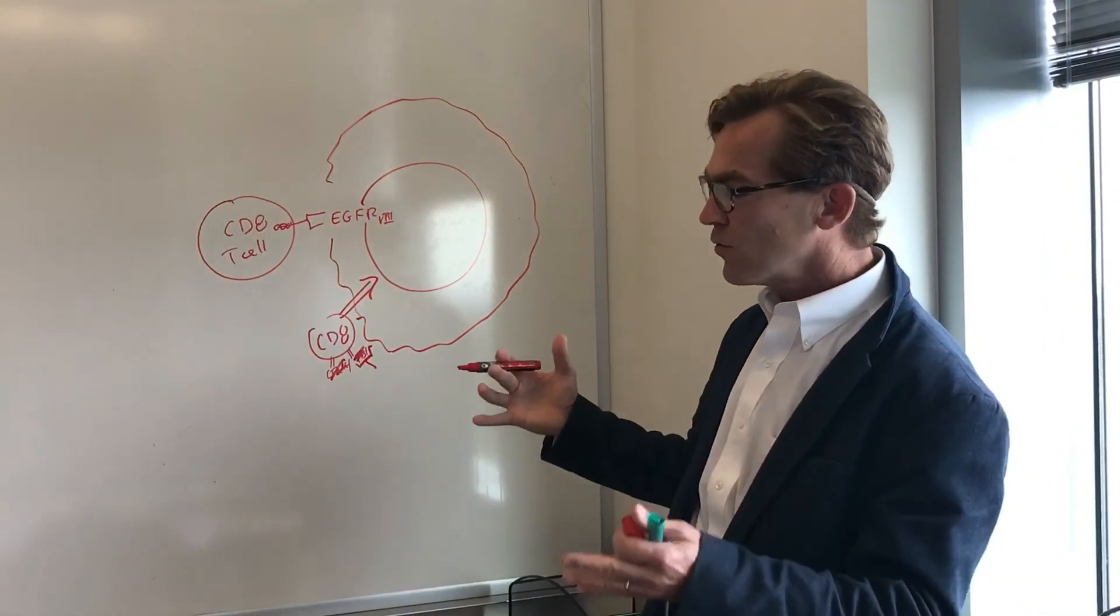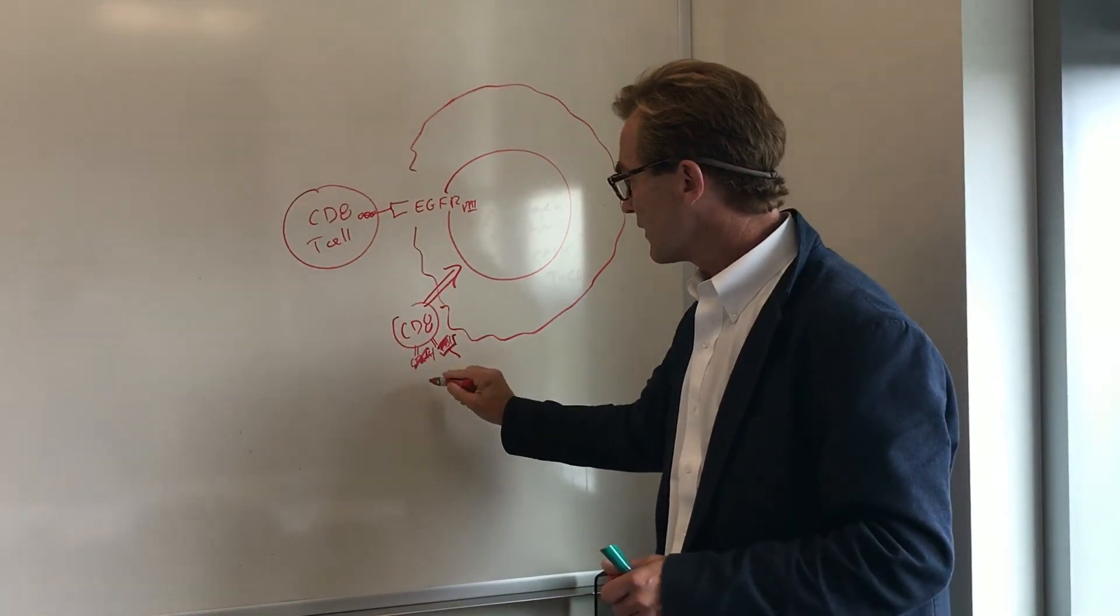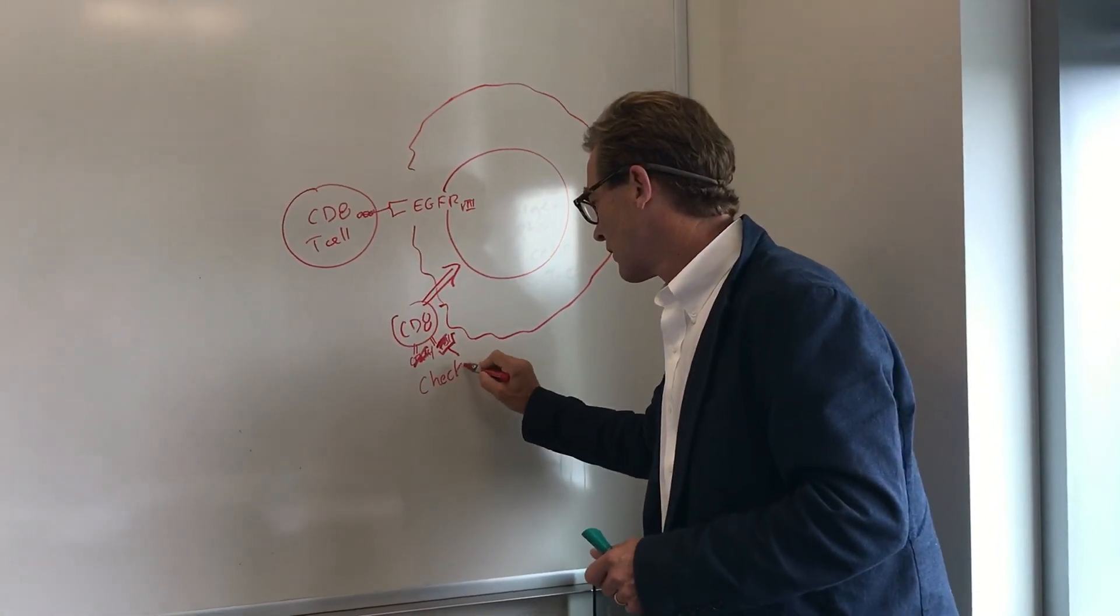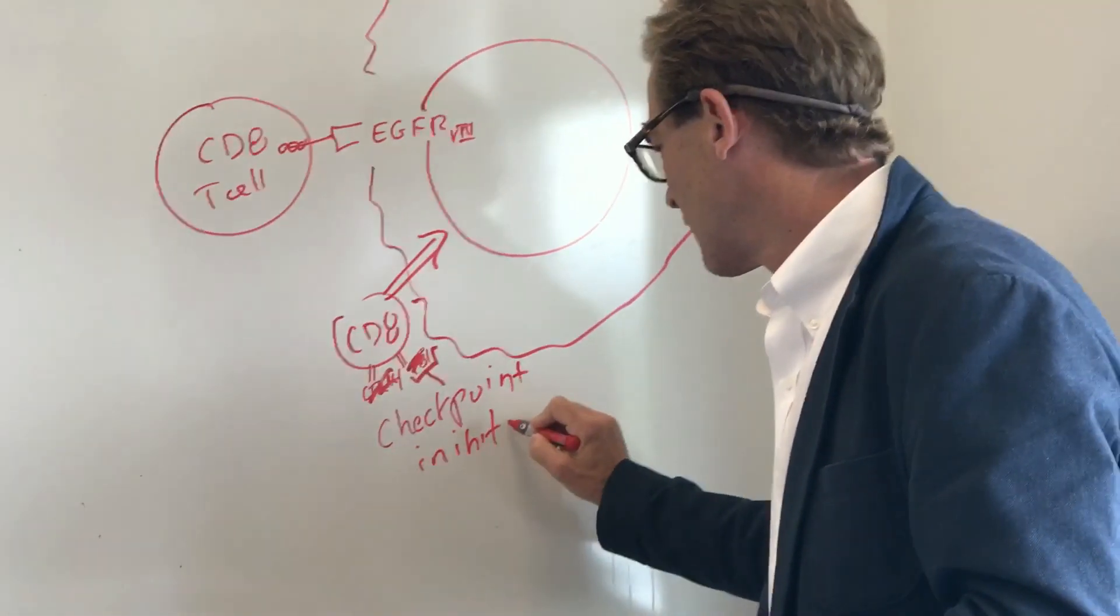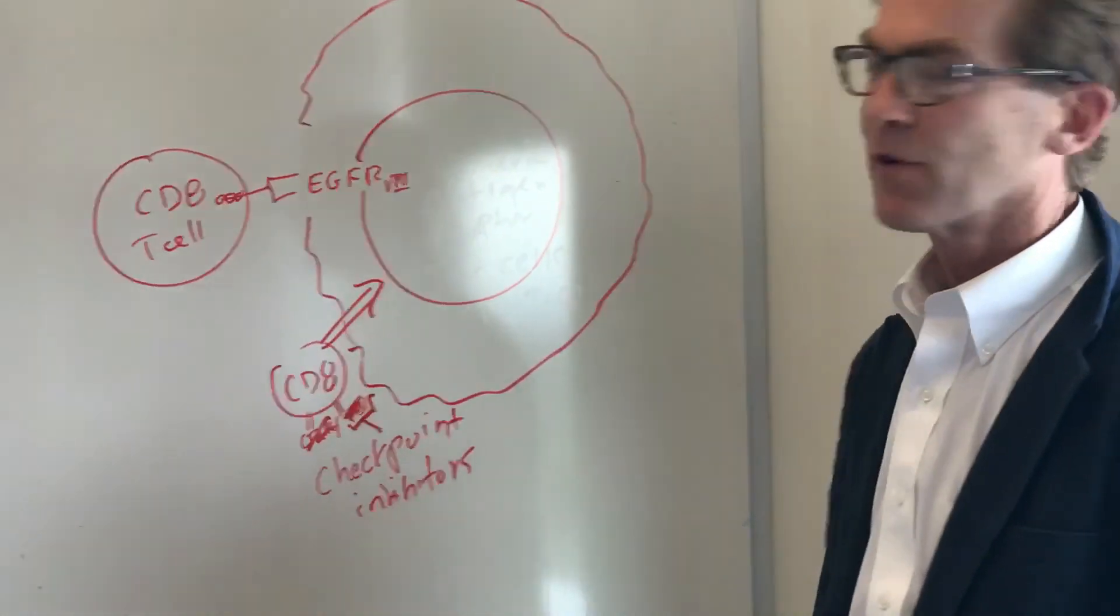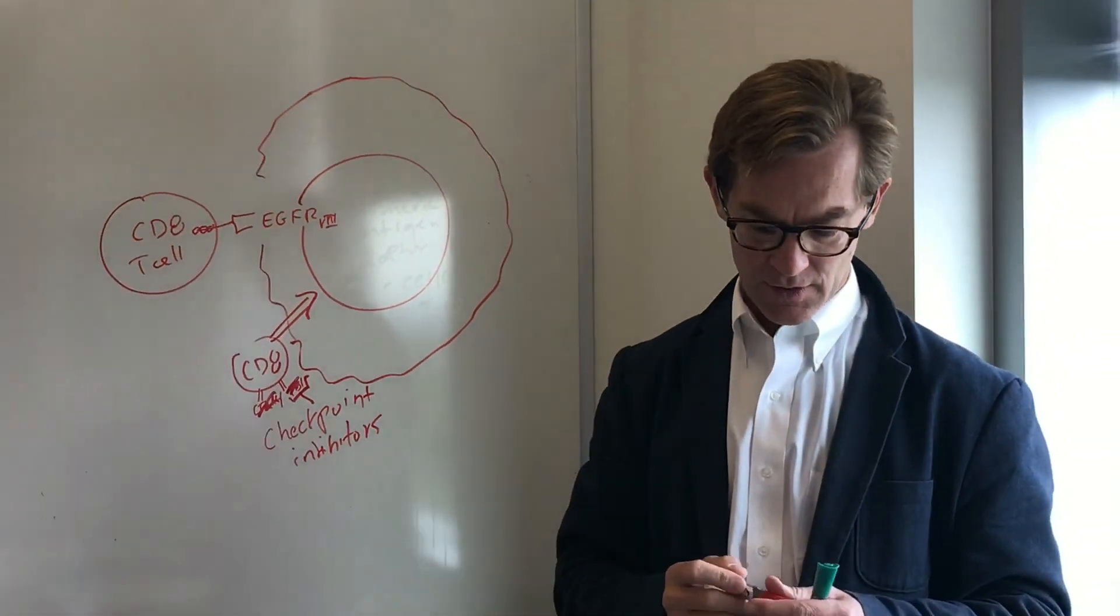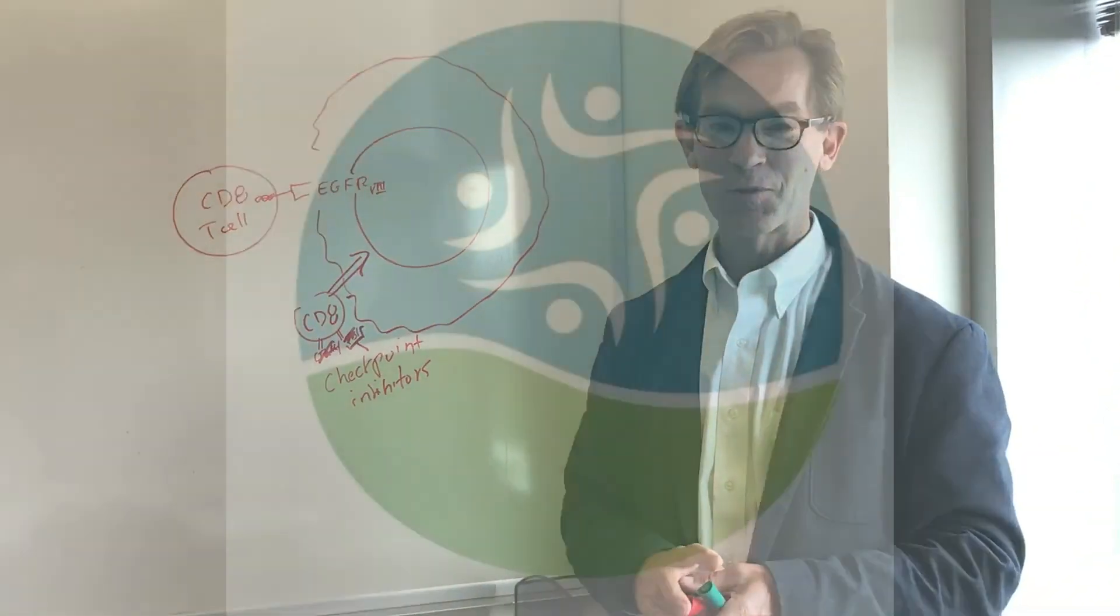So a two-pronged attack with CAR T cells or antibodies and then these so-called checkpoint inhibitors is where the science is heading now. So I hope that that gives some clarity to this complicated field. Thank you.